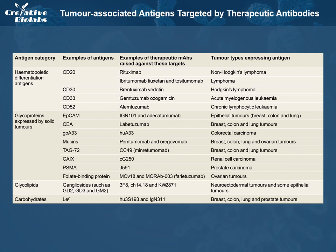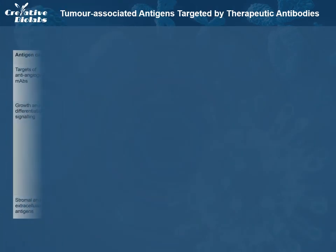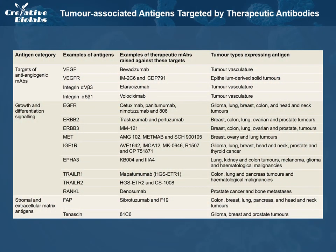Antigens involved in growth and differentiation signaling are often growth factors and growth factor receptors. Growth factors that are targets for antibodies in cancer patients include CEA2, EGFR, ERBB2, ERBB3, HGFR, IGF-1R, FAS, TRAILR1, TRAILR2, and RON.